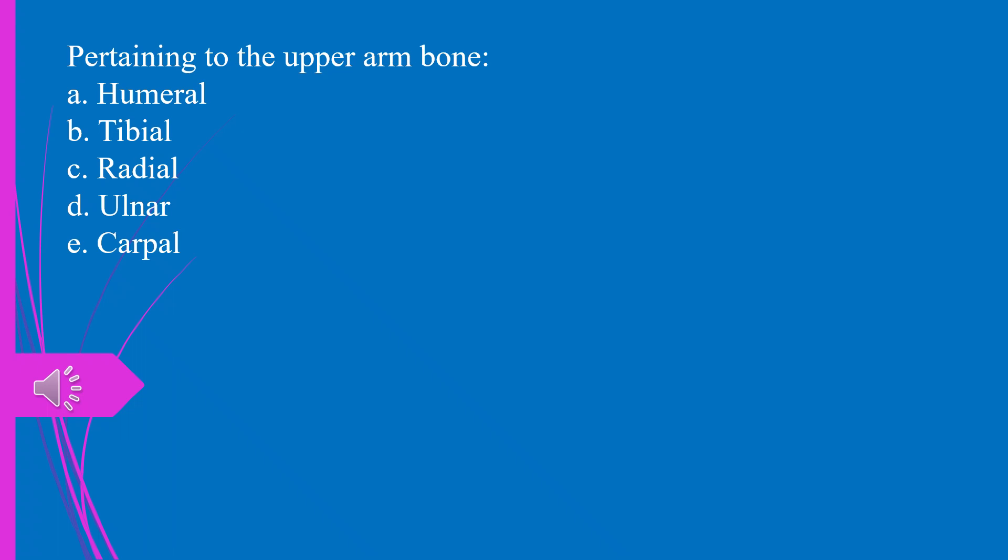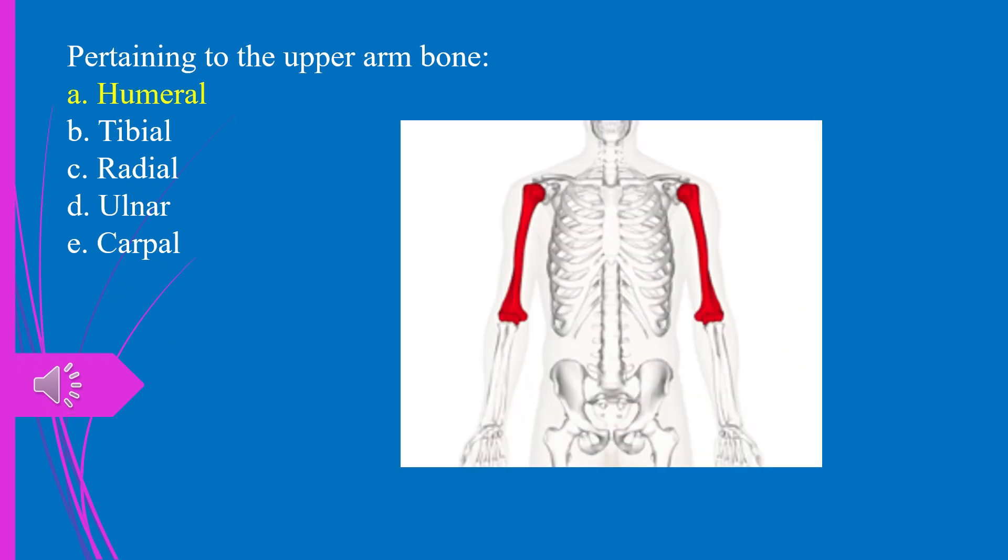Question 18. Pertaining to the upper arm bone: a) humeral, b) tibial, c) radial, d) ulnar, e) carpal. The answer is a, humeral.